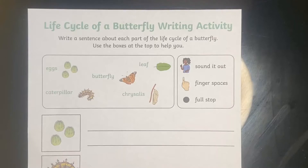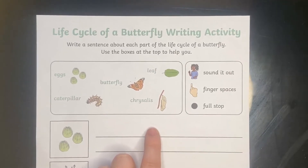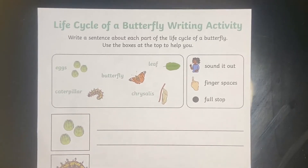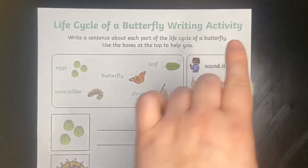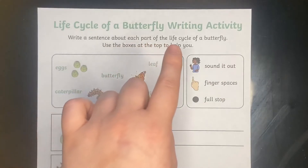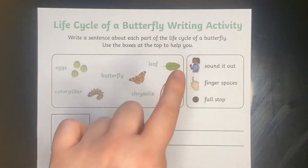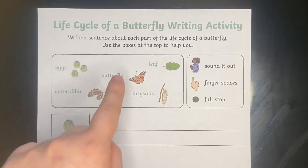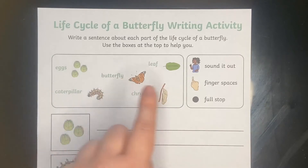Here is the worksheet that I would like you to print out this week. If you don't have access to a printer you can just use a piece of paper and write each sentence on that. That's absolutely fine. This is the life cycle of a butterfly writing activity and it says write a sentence about each part of the life cycle of a butterfly. Use the boxes at the top to help you. So up here we have some words to help us, with some pictures next to them so we know exactly what they are. These are tricky words that we might not know how to spell.